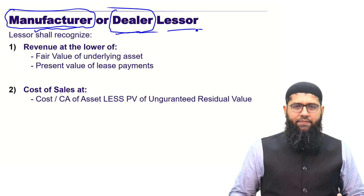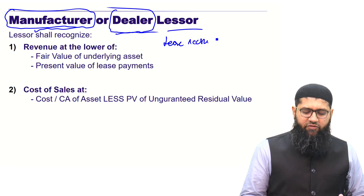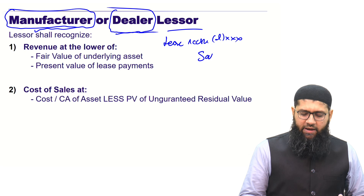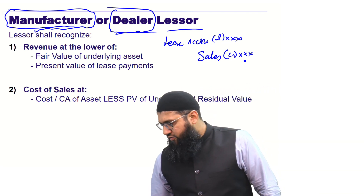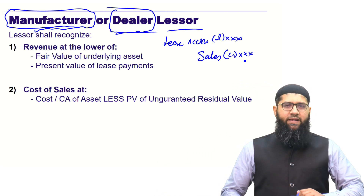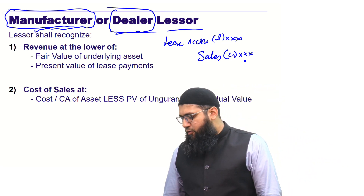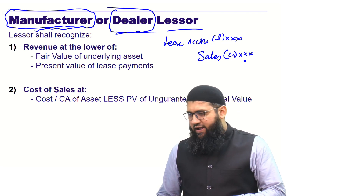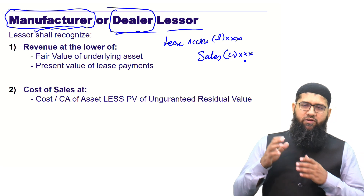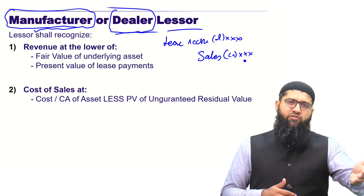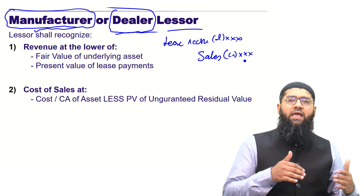The manufacturer or dealer lessor is going to debit lease receivable and correspondingly recognize a sale — they recognize sales because they are there to sell the product, and have sold it on lease or installments. If you are a manufacturer or dealer lessor giving the product to customers, it is most likely going to be a finance lease, because ultimately ownership is going to get transferred to the customer. So you say lease receivable debit and correspondingly sale credit.